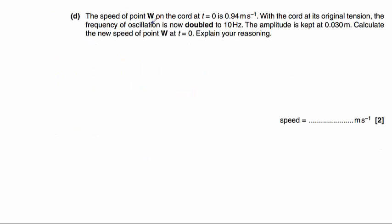Part D asks us to consider the speed of point W when the frequency is doubled to 10 hertz. The amplitude is kept the same. What's really important here is that we can't use v equals f lambda because that is the equation for the speed of a wave. Here, we are just considering the speed of point W as it oscillates up and down.